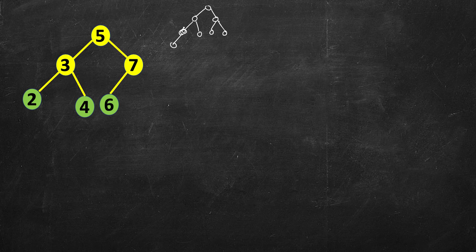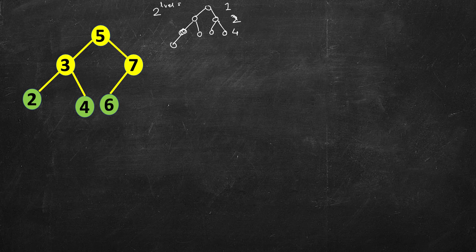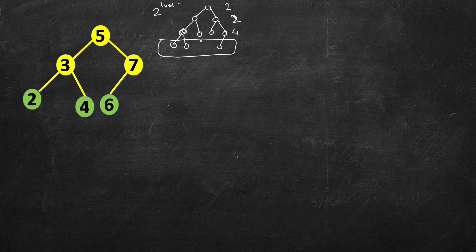All nodes have two children; only at the last level the nodes may not be complete. At the first level we can have one node, next level two nodes, then four, then eight, and so on — it's two raised to the power of the level number if we start from level zero. This may not be valid at the last level.